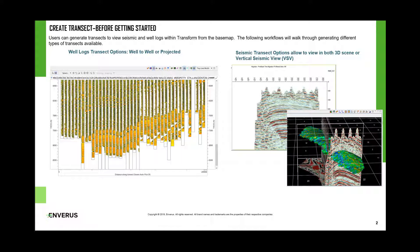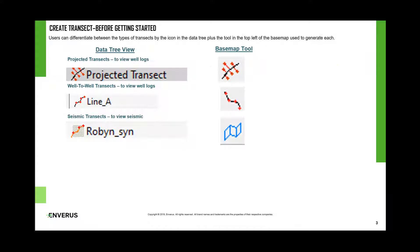Transform creating transects. Users can generate transects to view seismic and well logs within Transform from the base map. The following workflows will walk you through generating different types of transects available. Well log transect options include well-to-well or projected transects. Seismic transect options allow viewing in both a 3D scene or vertical seismic view, also known as a VSV.